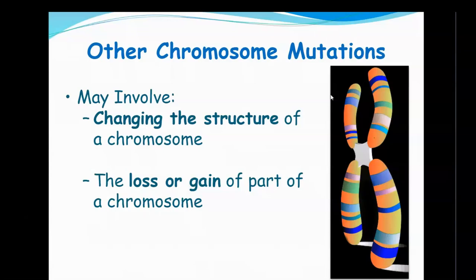Those are nondisjunctions where entire chromosomes fail to separate, so a gamete gets too many or not enough. The next set happens more during prophase, when all your chromosomes are condensing and getting tangled. When they start to move apart and form their tetrads, perhaps pieces break off of one and get attached to another. So those are the sorts of disorders we're going to look at now — we're not going to name the disorders, just identify the mutations.